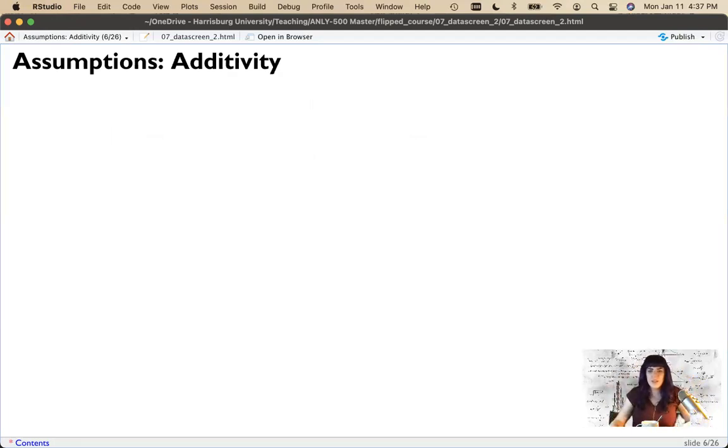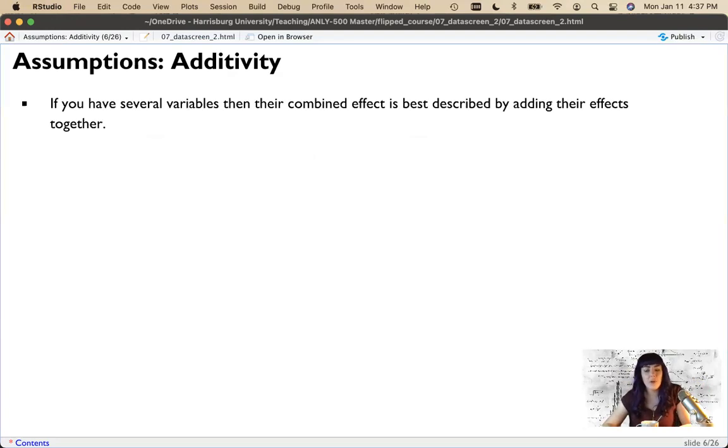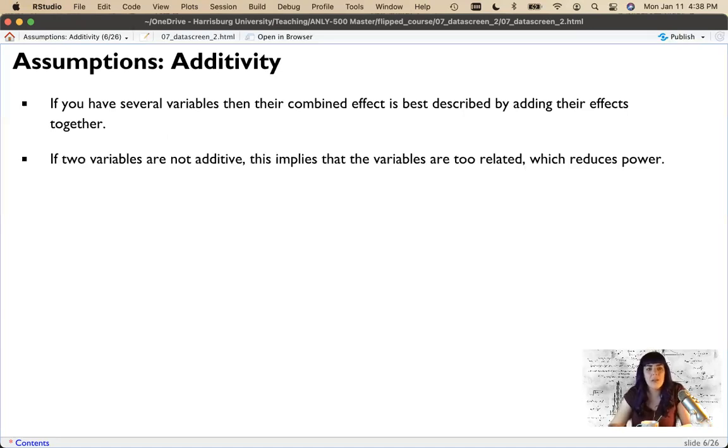Now, the second assumption we're going to cover here is additivity. And for all of our assumptions, we're going to call it the good thing. Independence is a good thing. Additivity is the good thing. The bad thing is sometimes called multicollinearity or singularity. This is when we have several variables that we're adding to our model. So we have more than one independent variable. We have multiple independent variables and additivity is when each variable adds something to the model. If variables are not additive, it implies that they're too related. So this mostly happens in regression style analyses where you have two independent variables that are very highly correlated. And at that point, why are you using both of them? If they're highly correlated, they tell you the exact same thing.